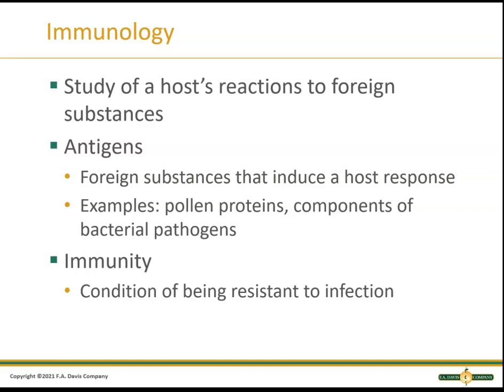Many things we already know can produce an immune response — things we're allergic to like pollens, hay fever, and dander, as well as bacterial pathogens. That's why you get immunizations to protect you against those things. Right now of course the most important one is COVID, so we have vaccines for that. It's a foreign thing that gets into our body and will elicit an immune response. Immunity just means you have the condition of being resistant to an infection.